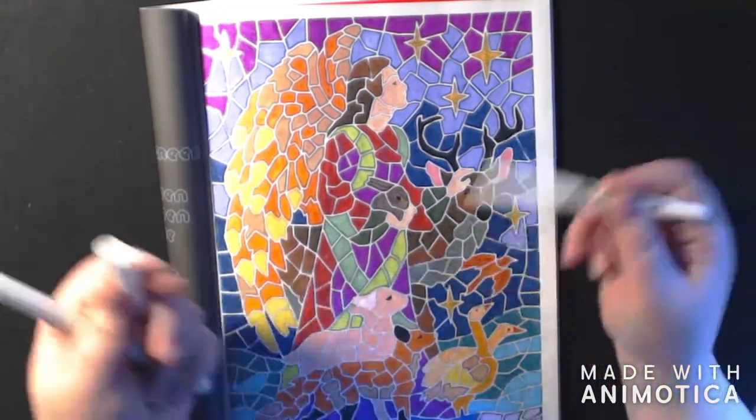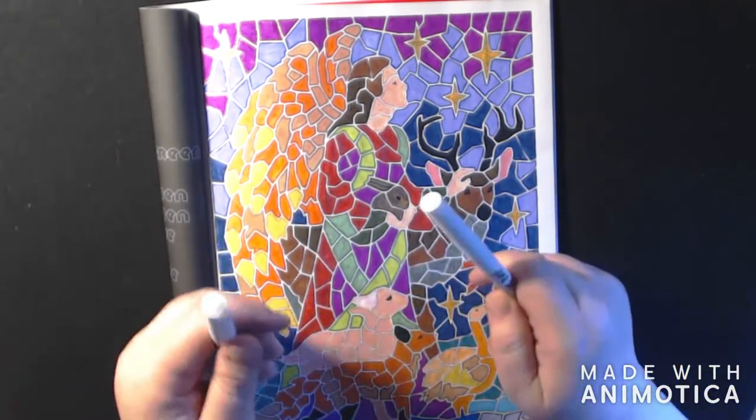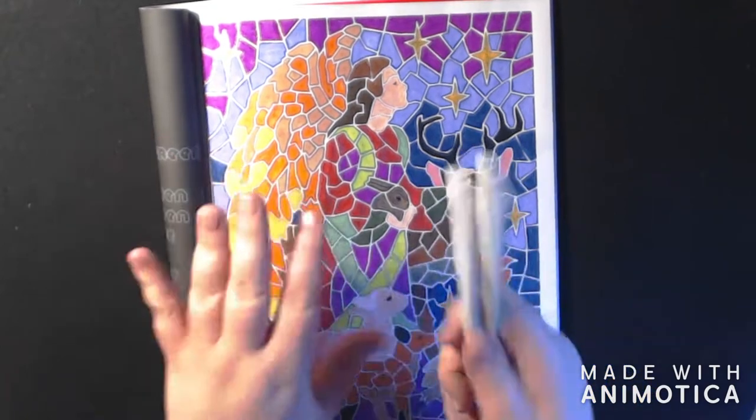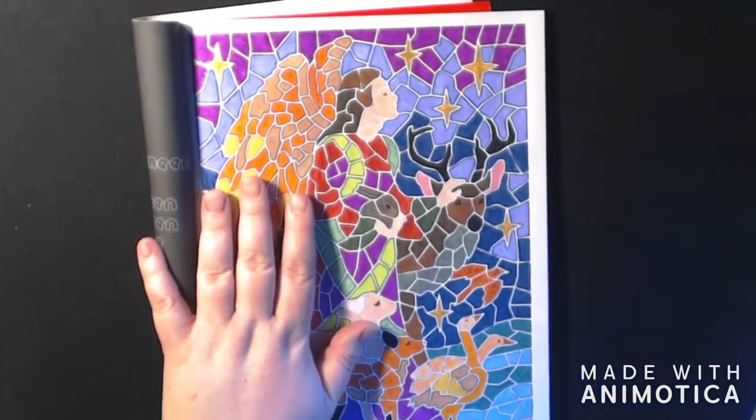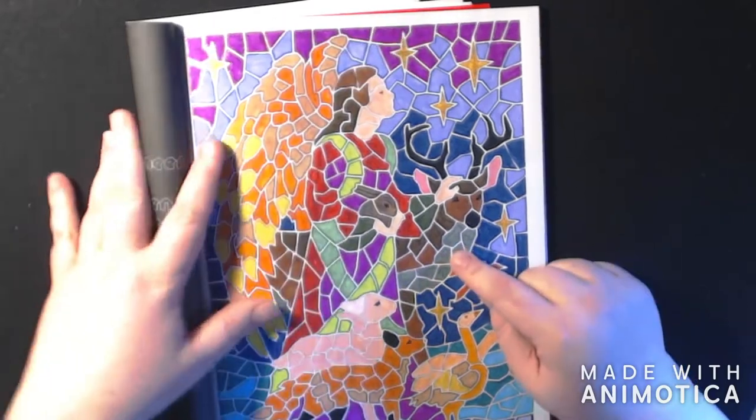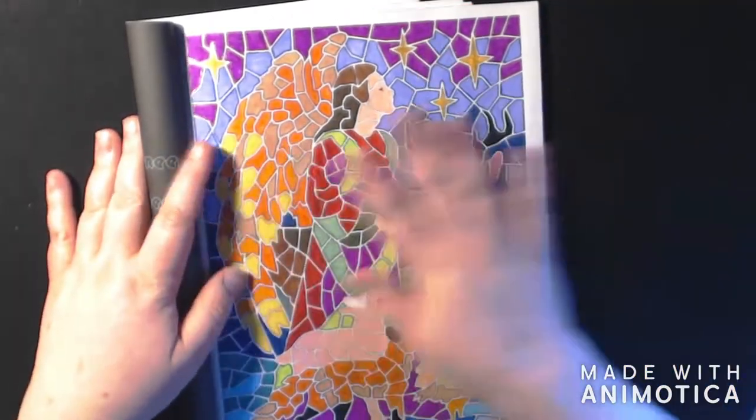It whitens it right up. You can also use a white Posca pen or those white gel pens. I forget what they're called, but it's just a white Signo gel pen. You just go over the lines with it.